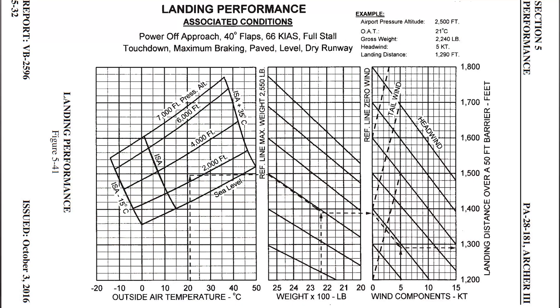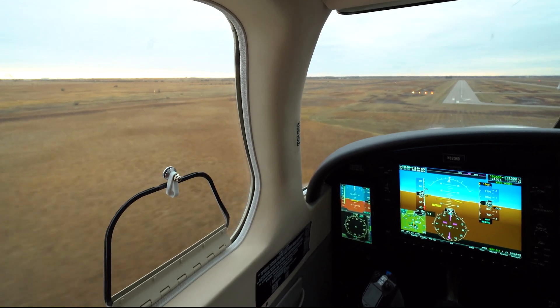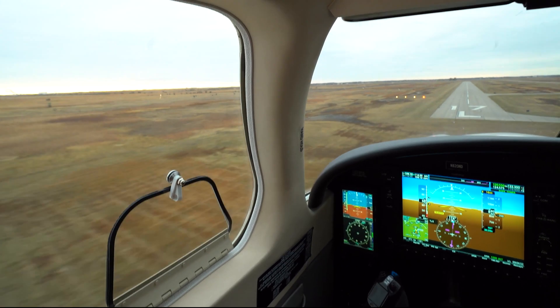The POH approach speed for the Piper Archer is 66 knots. As a reminder, VSO is 45. So we need to work on slowing the airplane down as we approach the roundout. It is not required, nor should you be, maintaining 66 knots all the way to the roundout.